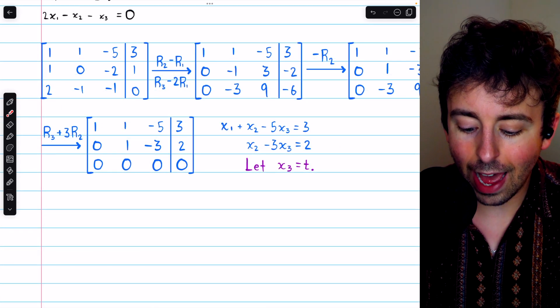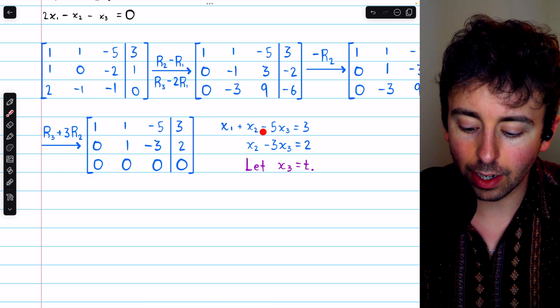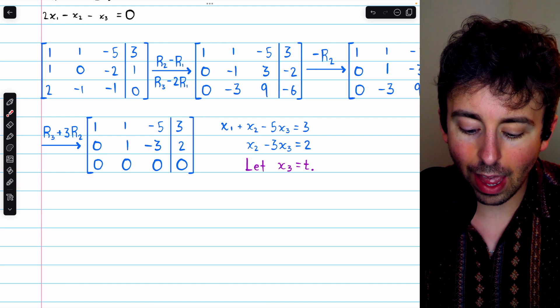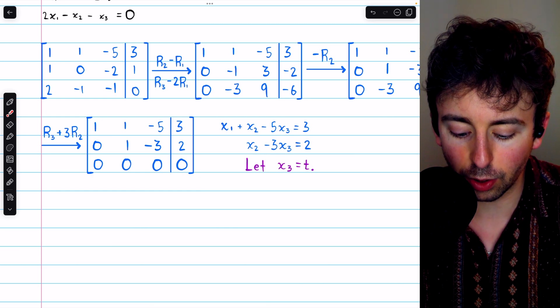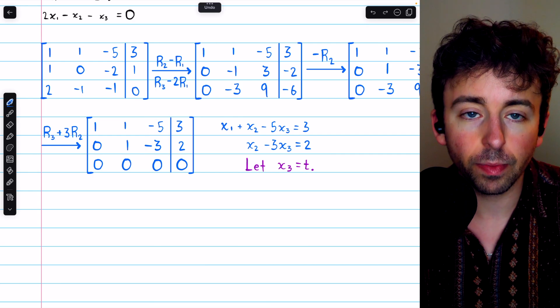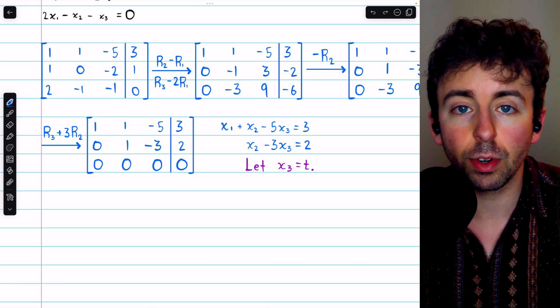So from row one, we have x1 plus x2 minus 5x3 equals 3. From row two, we have x2 minus 3x3 equals 2. And of course, there's no leading entry in column three, which means x3 is a free variable.